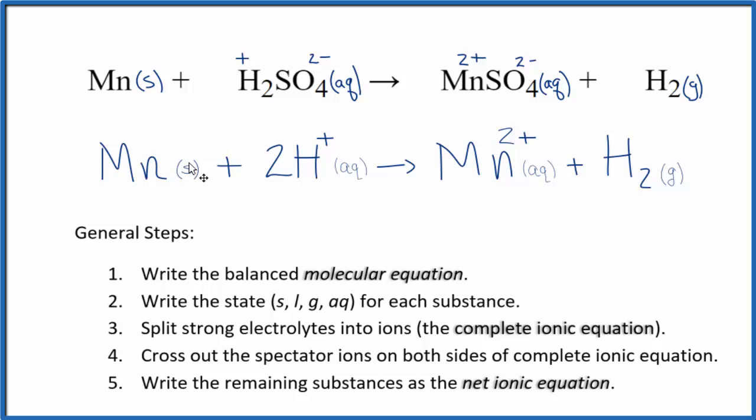So this is the balanced net ionic equation for Mn plus H2SO4. If you notice, charge is conserved. We have 2 times 1 plus, so on this side we have 2 plus. Over here, we have 2 plus. So charge is balanced. And if you count the atoms, they're balanced as well.